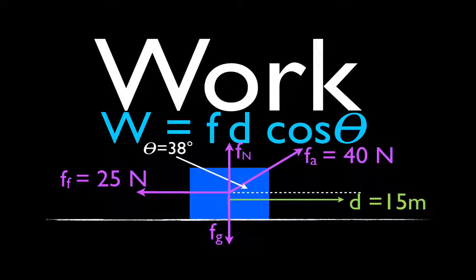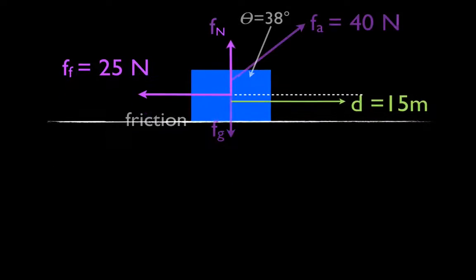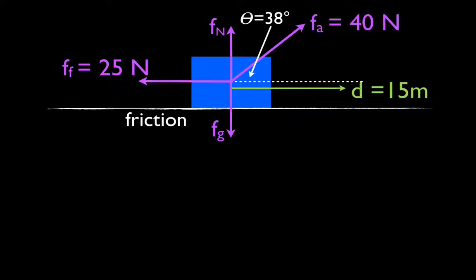In today's video we are going to do two things. We are going to calculate, first of all, the net work that is done on this object by these four forces. And then, based on the net work, we're going to calculate — bonus content — the change in velocity of the object after that work has been acted upon it.